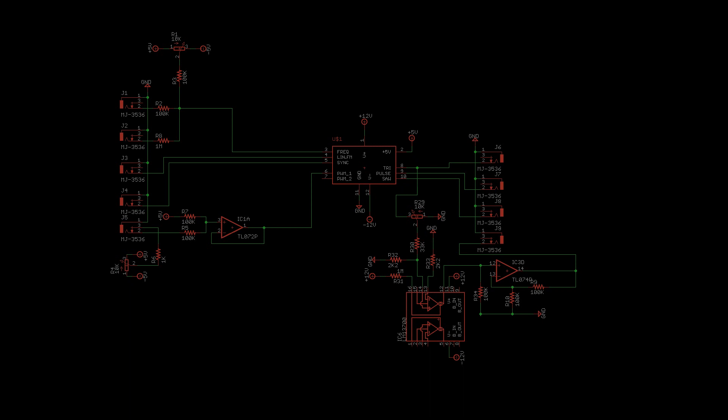And now for how that circuit works. Frequency control is done through 100K resistors for coarse control and a 1Mohm resistor for fine control. Hard sync and FM are direct connections.